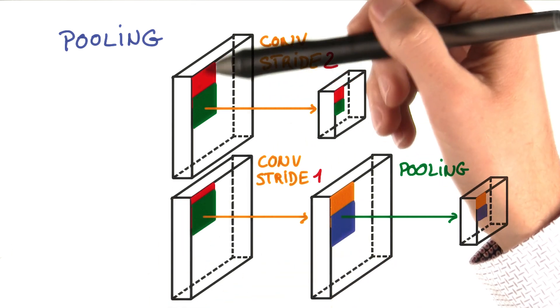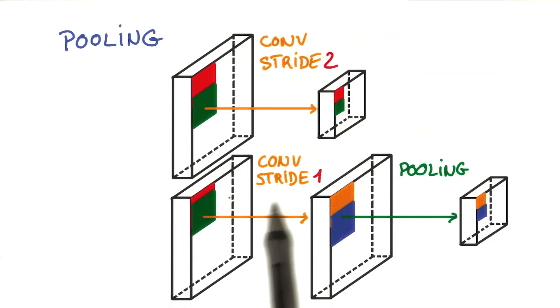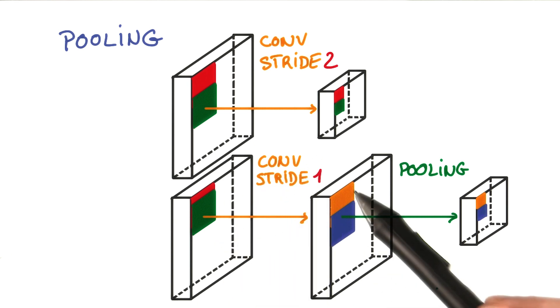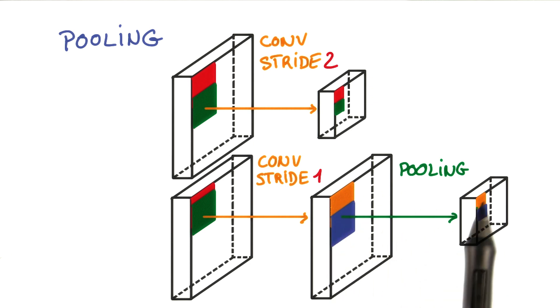What if instead of skipping one in every two convolutions, we still ran with a very small stride, say for example one, but then took all the convolutions in a neighborhood and combined them somehow? That operation is called pooling, and there are a few ways to go about it.